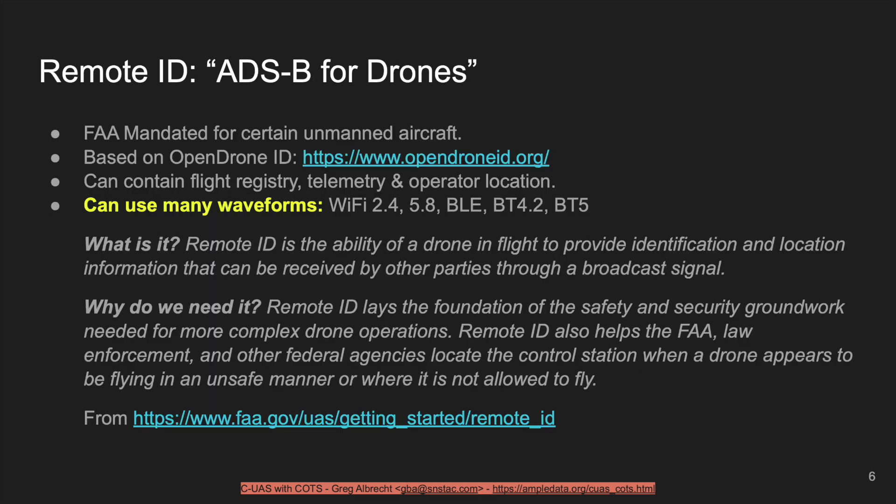The solution the FAA and industry have come up with is remote ID, which you can think of as ADS-B for drones — ADS-B being the system for crewed aircraft that allows them to transmit their position and vector information in real time to other aircraft and ground stations. The FAA has mandated remote ID for certain uncrewed aircraft, and it is based on OpenDroneID, available at OpenDroneID.org — an open standard that anyone can implement and use.